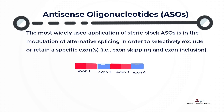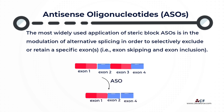The most widely used application of Steric Block ASO is in the modulation of alternative splicing, in order to selectively exclude or retain a specific exon — that is, exon skipping and exon inclusion, respectively.